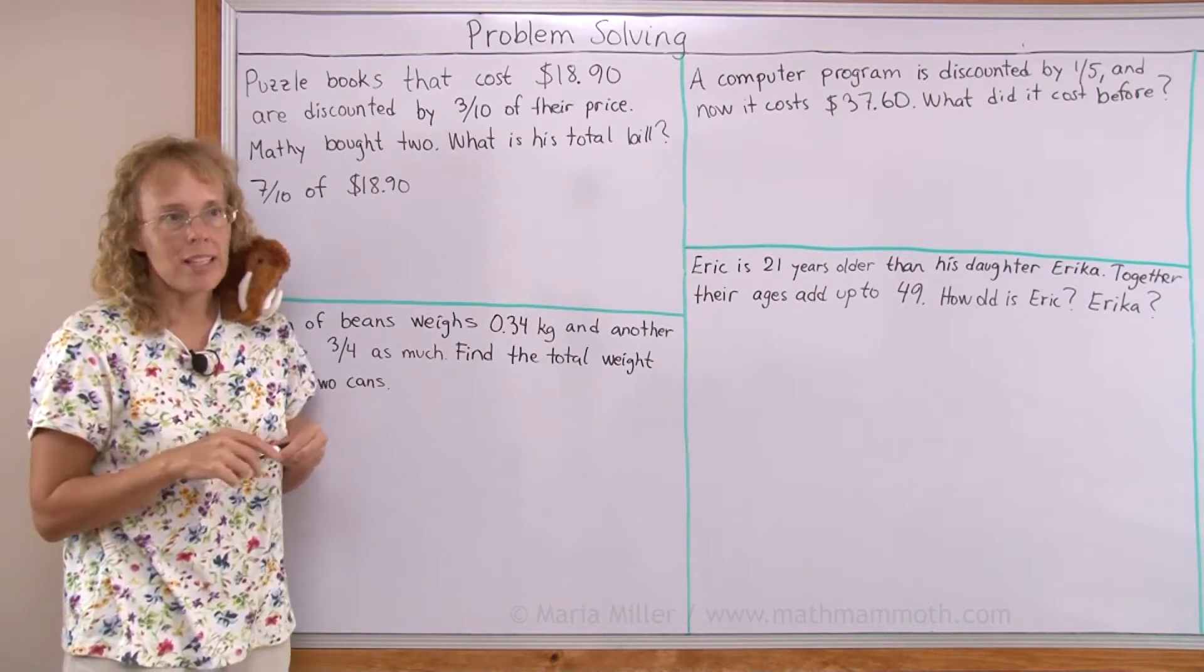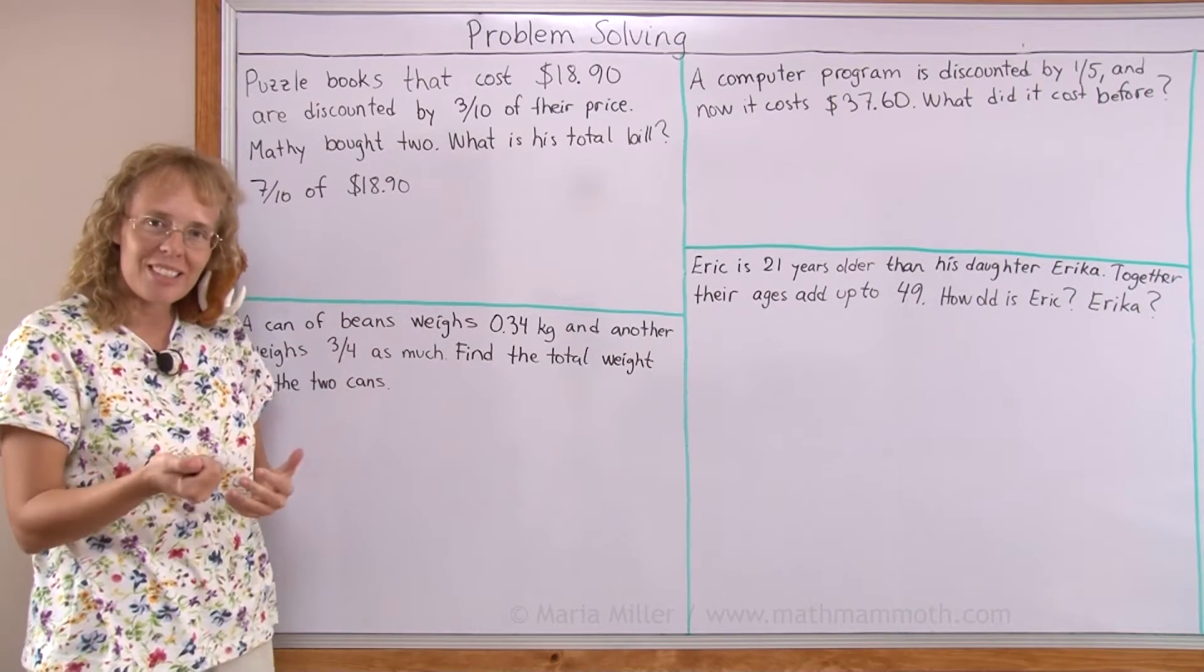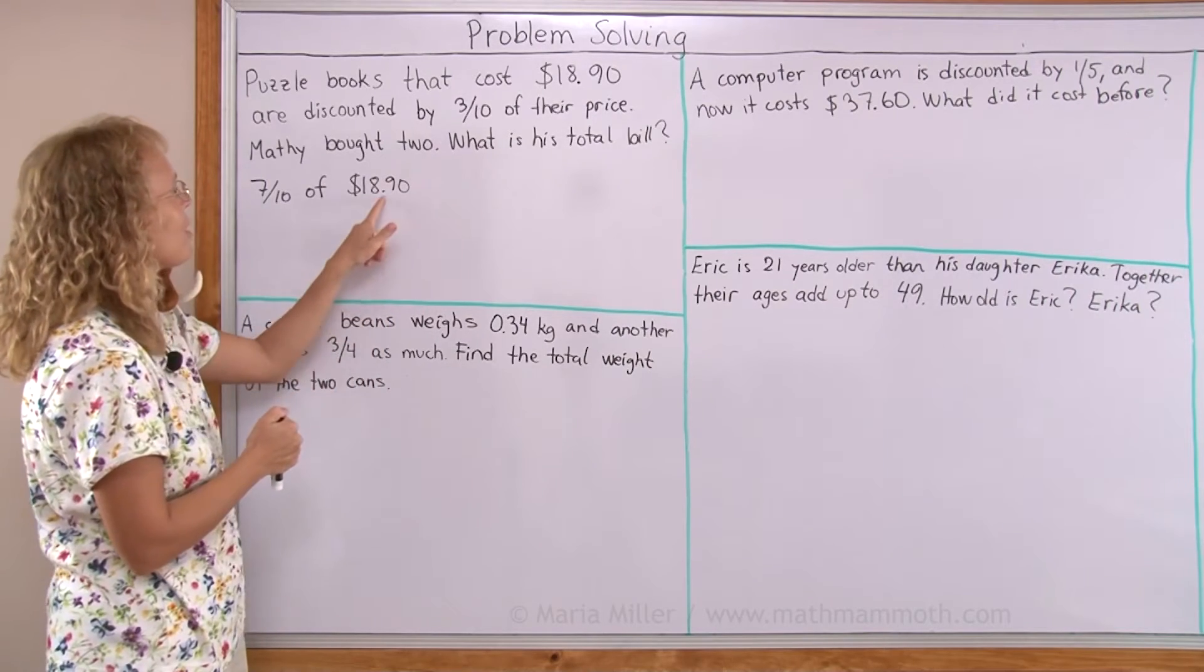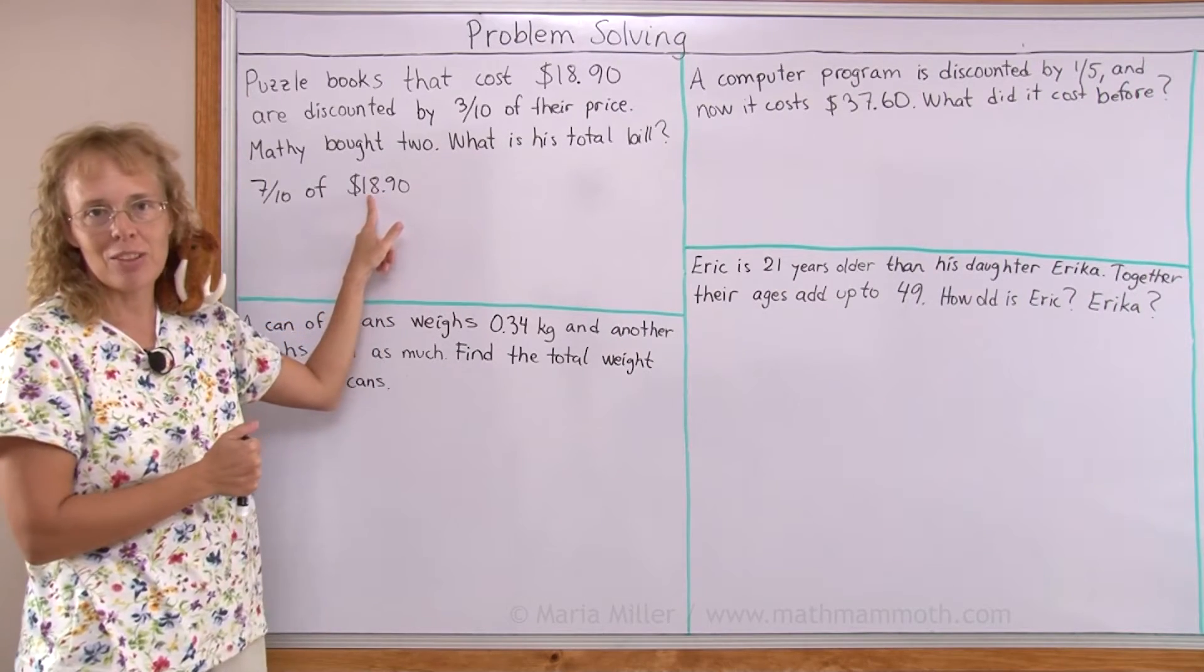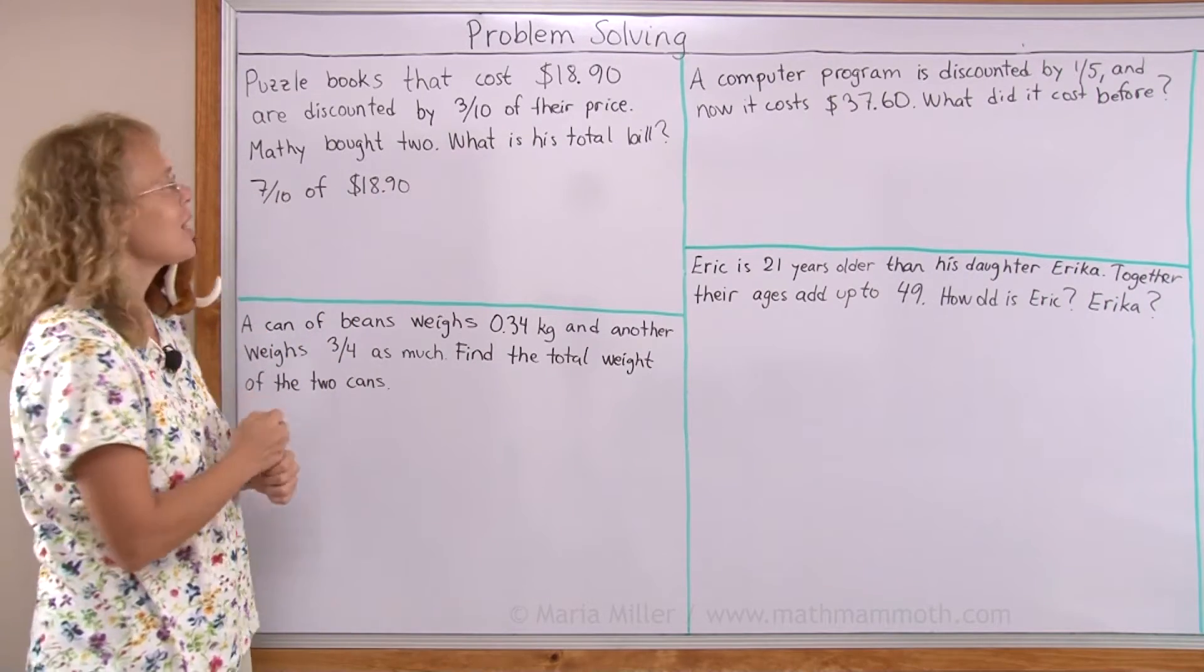You can do this in several ways. You could find one-tenth of this price which is easy because you just move the decimal point. And you get $1.89 and then you multiply that by seven. And that's it.